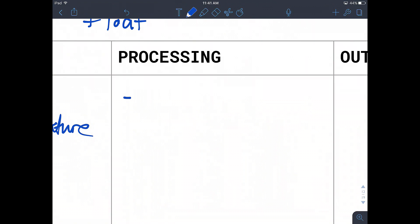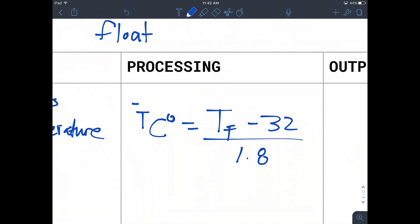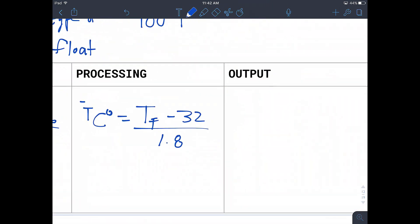Then we need to process that input because we don't need any other input. So the temperature in Celsius that we are processing is equal to the temperature of the Fahrenheit minus 32 all over 1.8. That is the formula or the equation to convert our Fahrenheit to Celsius.